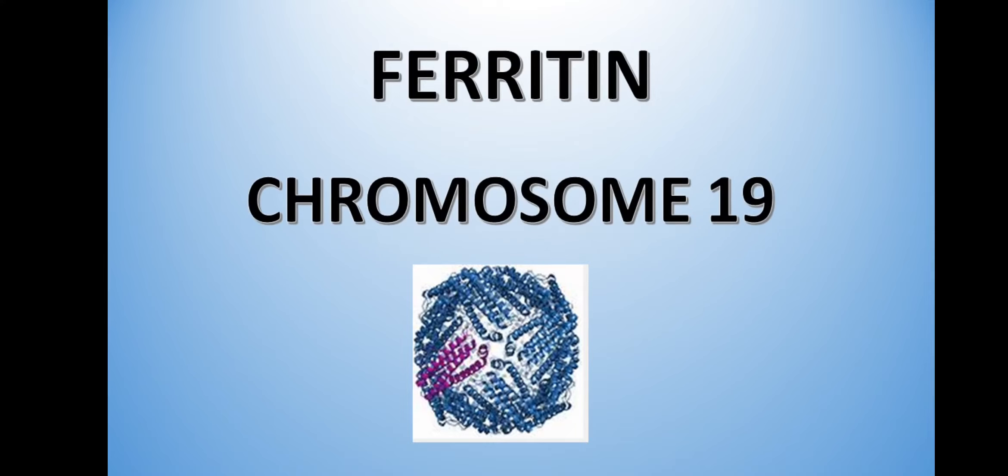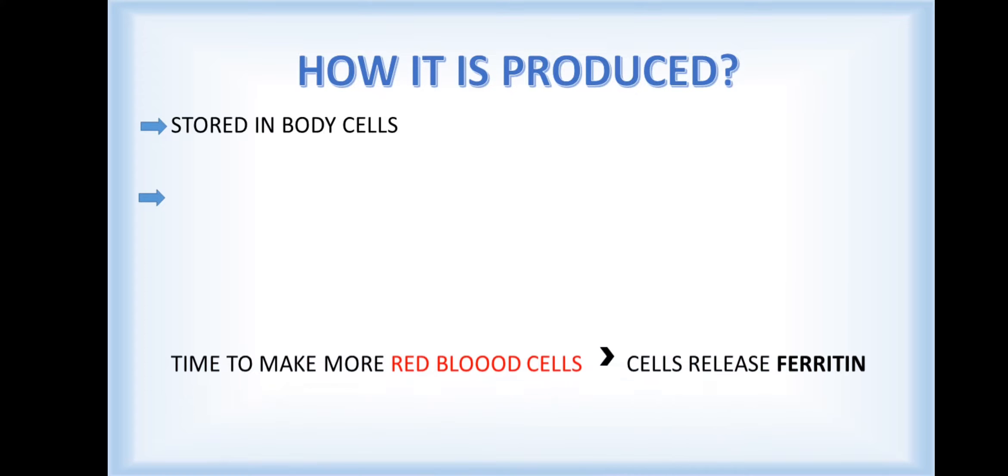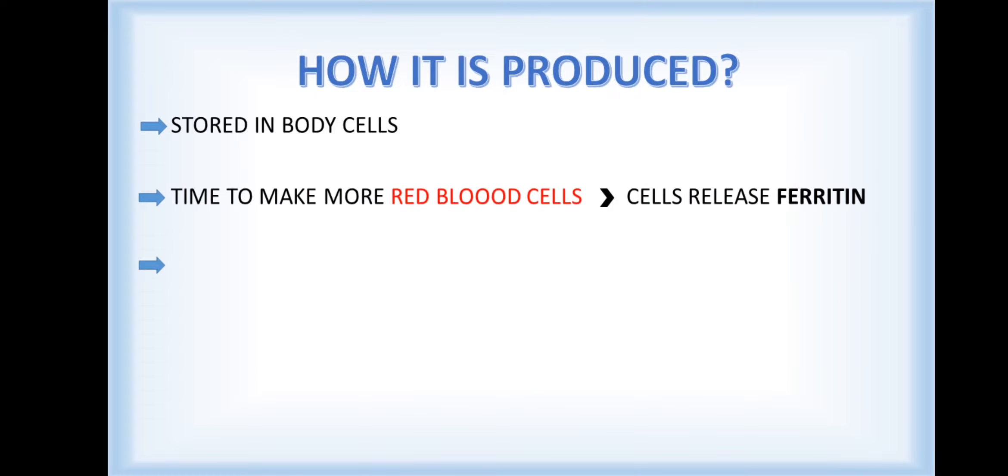Ferritin is located in chromosome 19. How is it produced? Ferritin is stored in the body's cells until it is time to make more red blood cells. The body will signal the cells to release ferritin.